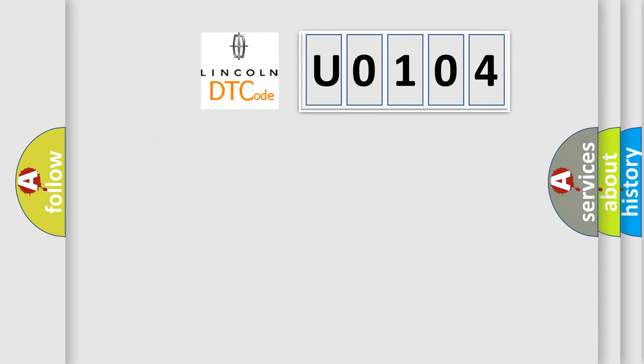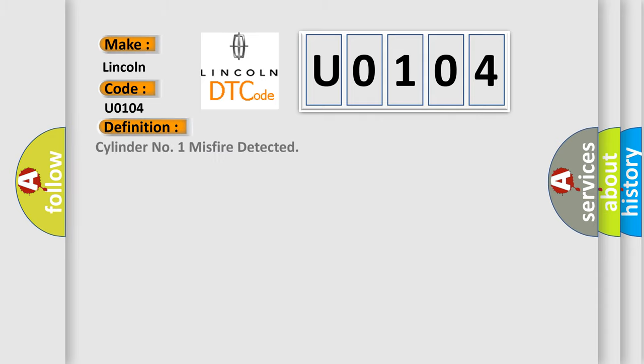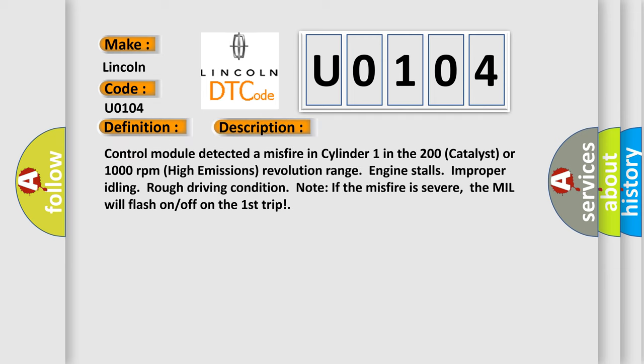So, what does the diagnostic trouble code U0104 interpret specifically for Lincoln car manufacturers? The basic definition is: Cylinder number one misfire detected. Here is a short description of this DTC code: the control module detected a misfire in cylinder one in the 200 catalyst or 1000 revolutions per minute high emissions revolution range.